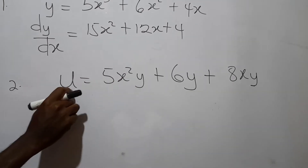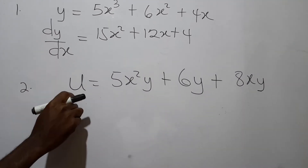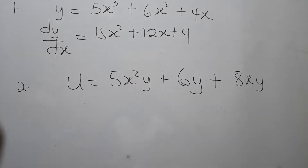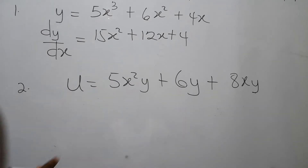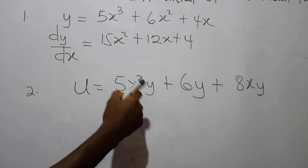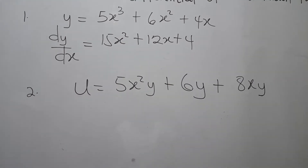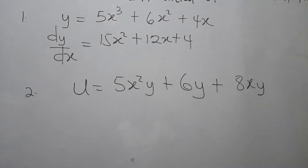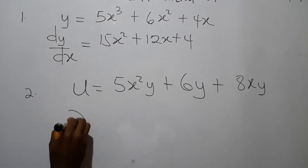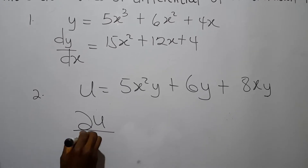In this case, the independent variables are x and y, and the dependent variable is u. There are two independent variables and one dependent variable. If we differentiate with respect to one independent variable, say x, the other independent variable y will be held constant. We write that as ∂u/∂x.